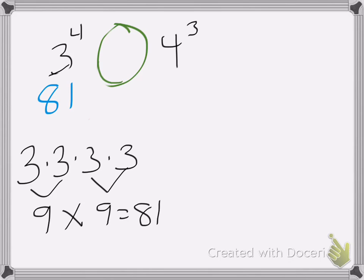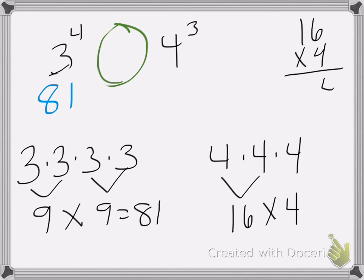Now let's do 4 cubed, which is 4 times 4 times 4. Well, 4 times 4 is 16 and times that by 4. So 16 times 4, 4 times 6 is 24, carry the 2, 4 times 1 is 4, plus 2 is 6. So 4 cubed is the same as 64. We know that 3 to the 4th power is greater than 4 to the 3rd power.